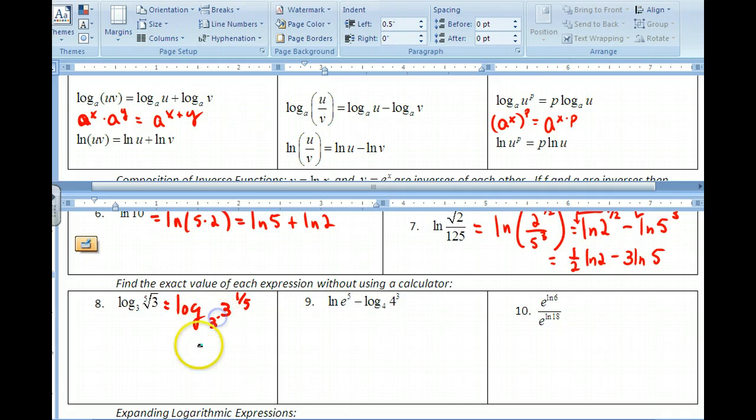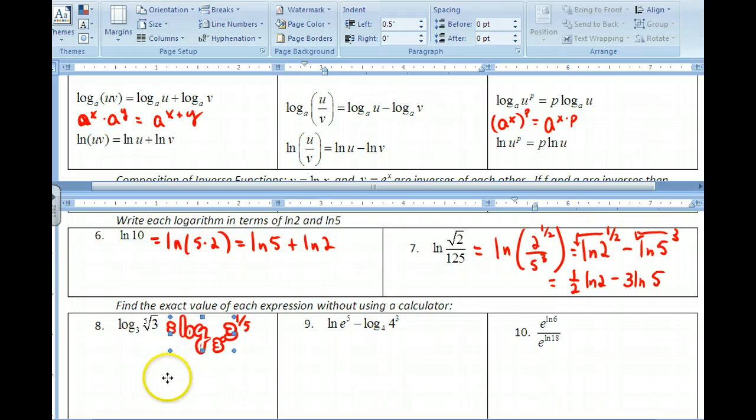So this is what 3 to what power gives you 3 to 1 fifth. We have technical difficulties. And we're back. This is equal to 1 fifth.